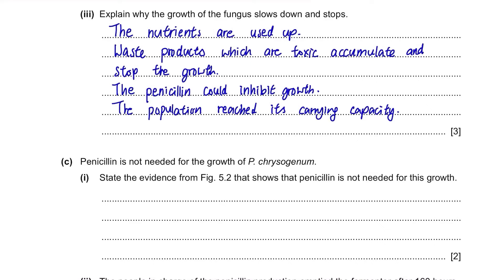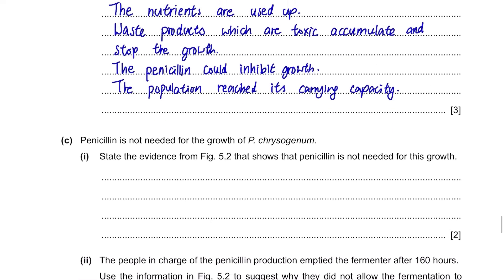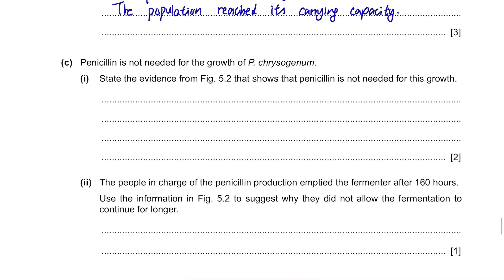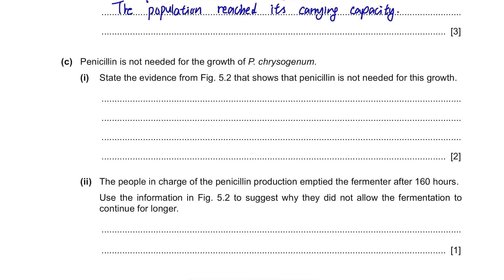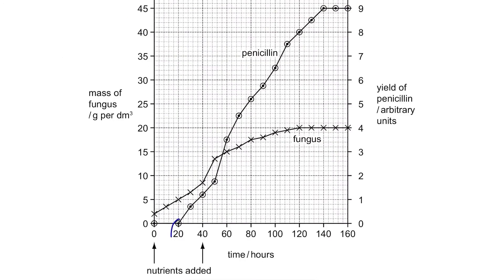Part C. Penicillin is not needed for the growth of P. chrysogenum. State the evidence from figure 5.2 that shows penicillin is not needed for growth. From the graph, penicillin was only produced after 20 hours, yet the fungus started to grow from the beginning. So during the first 20 hours, the fungus was able to grow without any penicillin being produced.